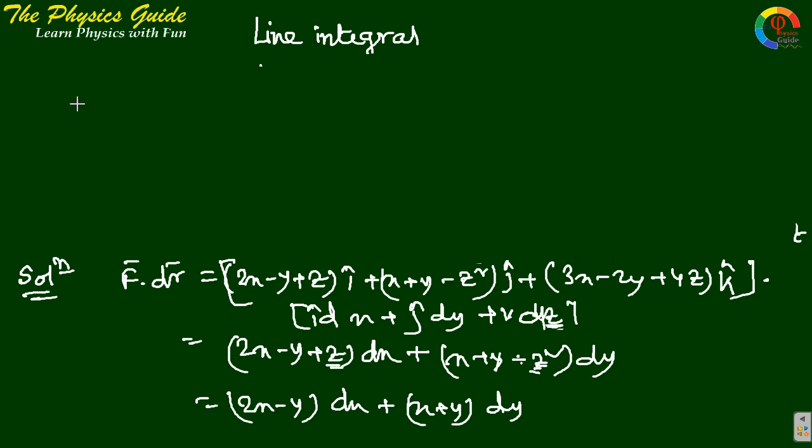We need to convert to parameter t. F·dr = (2x - y)dx + (x + y)dy. Substituting: x = 3cos(t), y = 3sin(t), dx = -3sin(t)dt. So we have [2(3cos t) - 3sin t](-3sin t dt).